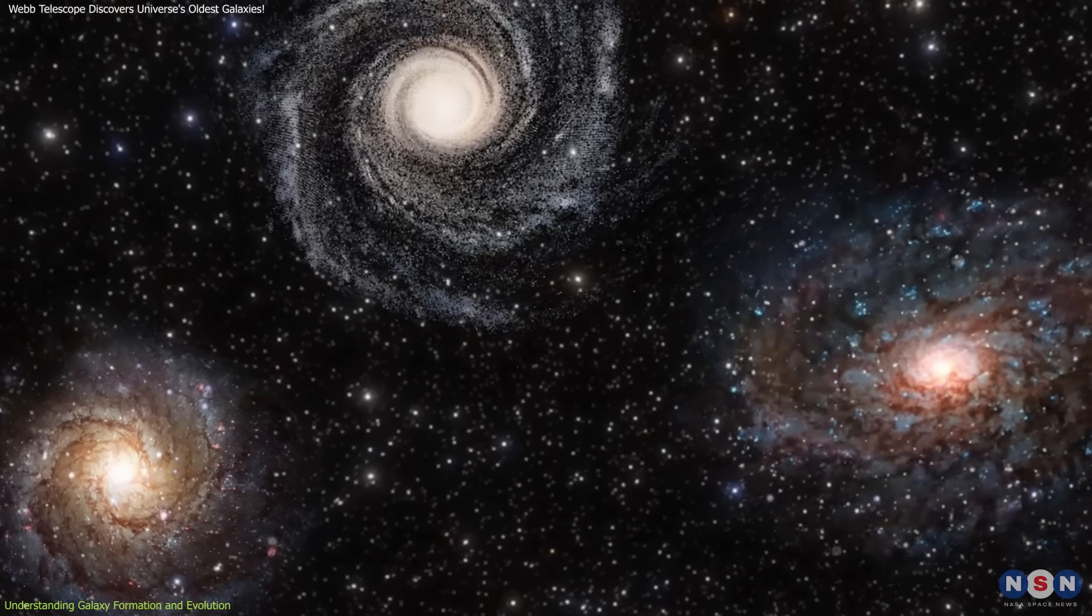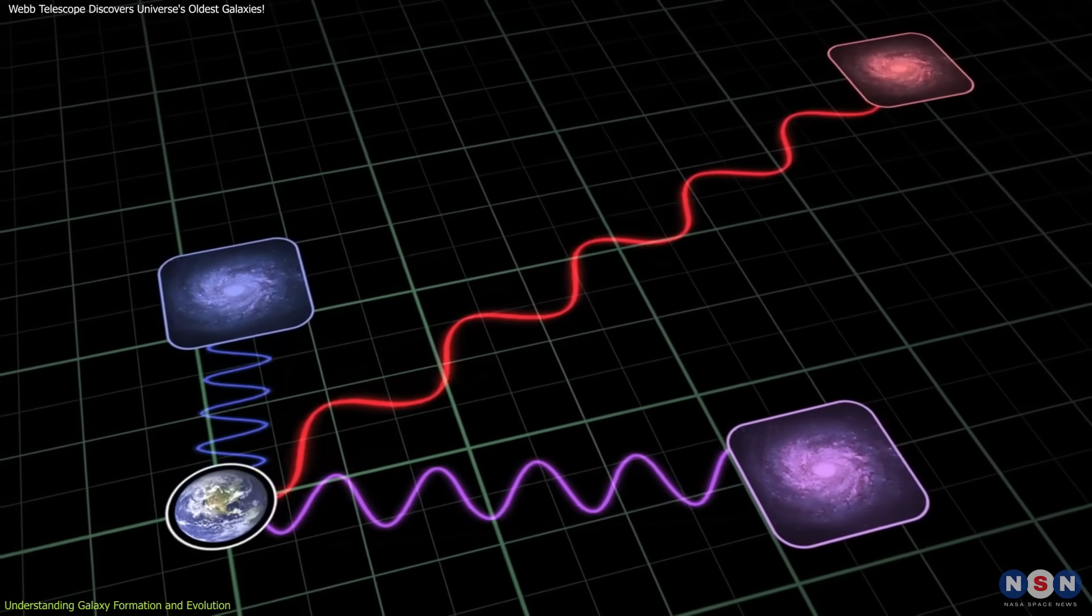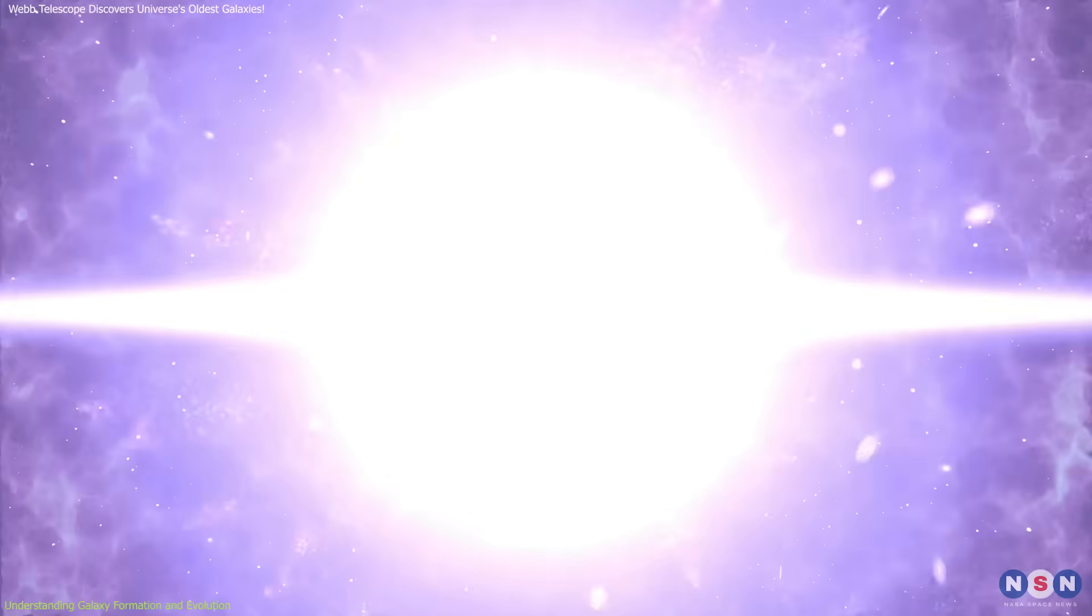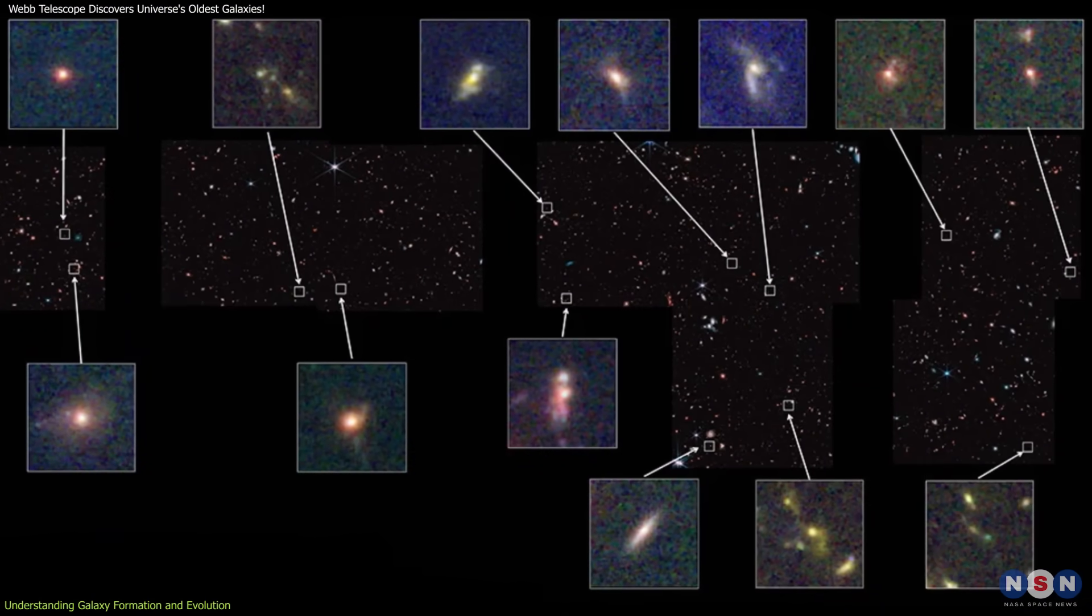Such precise measurements are essential for determining the age and distance of these astronomical objects, and the redshifts recorded place these galaxies at just 330 million years after the Big Bang, categorizing them among the earliest galaxies ever observed.